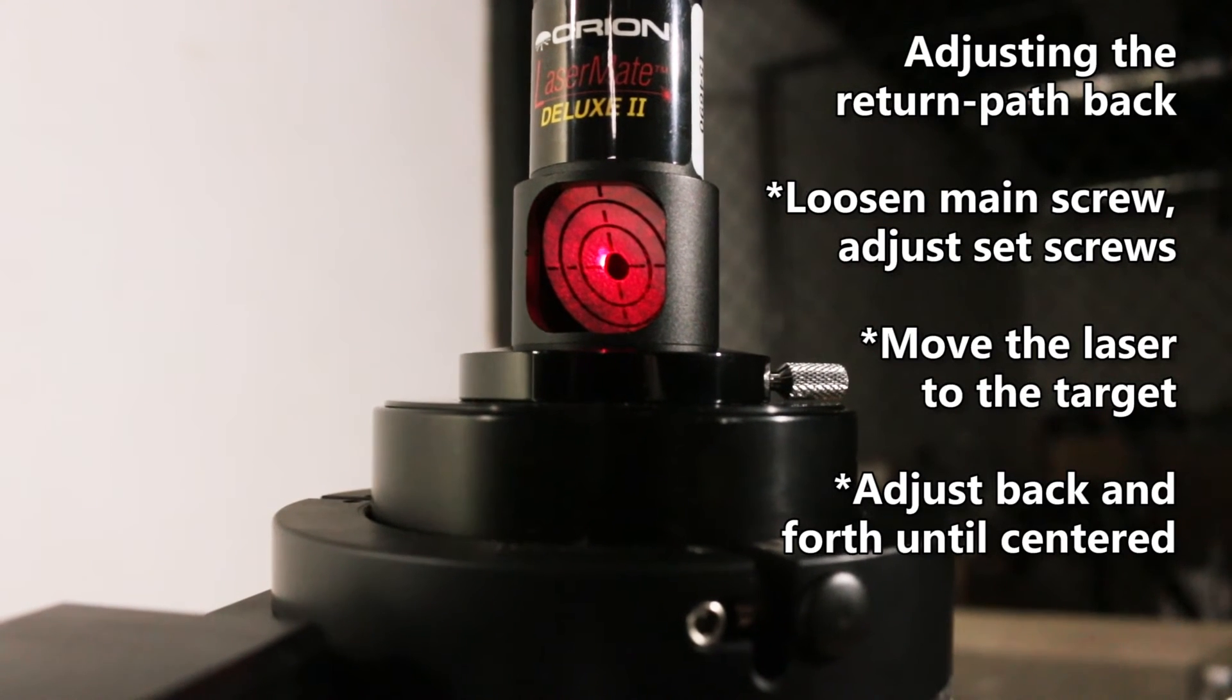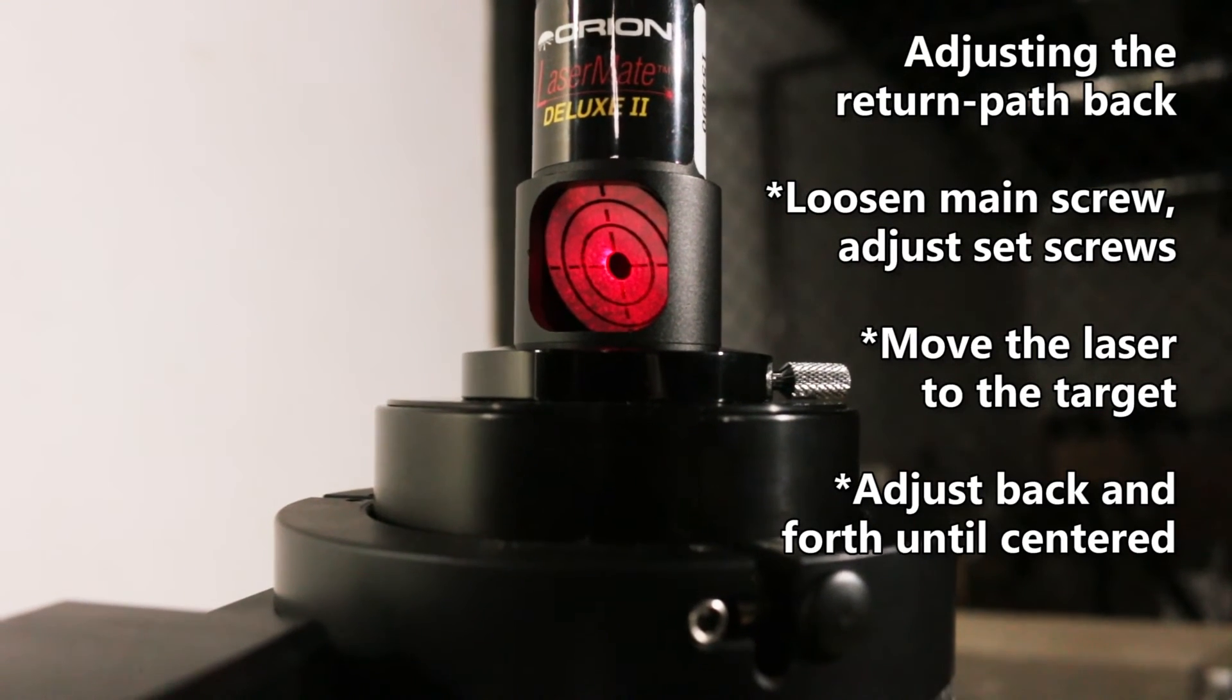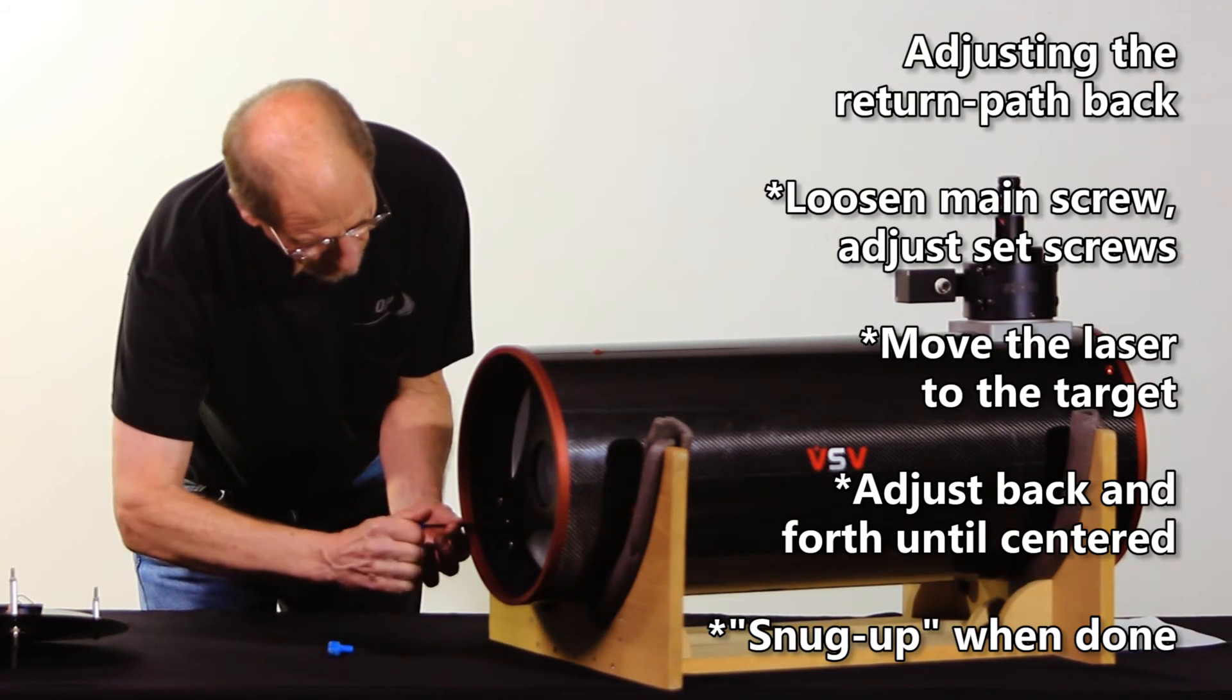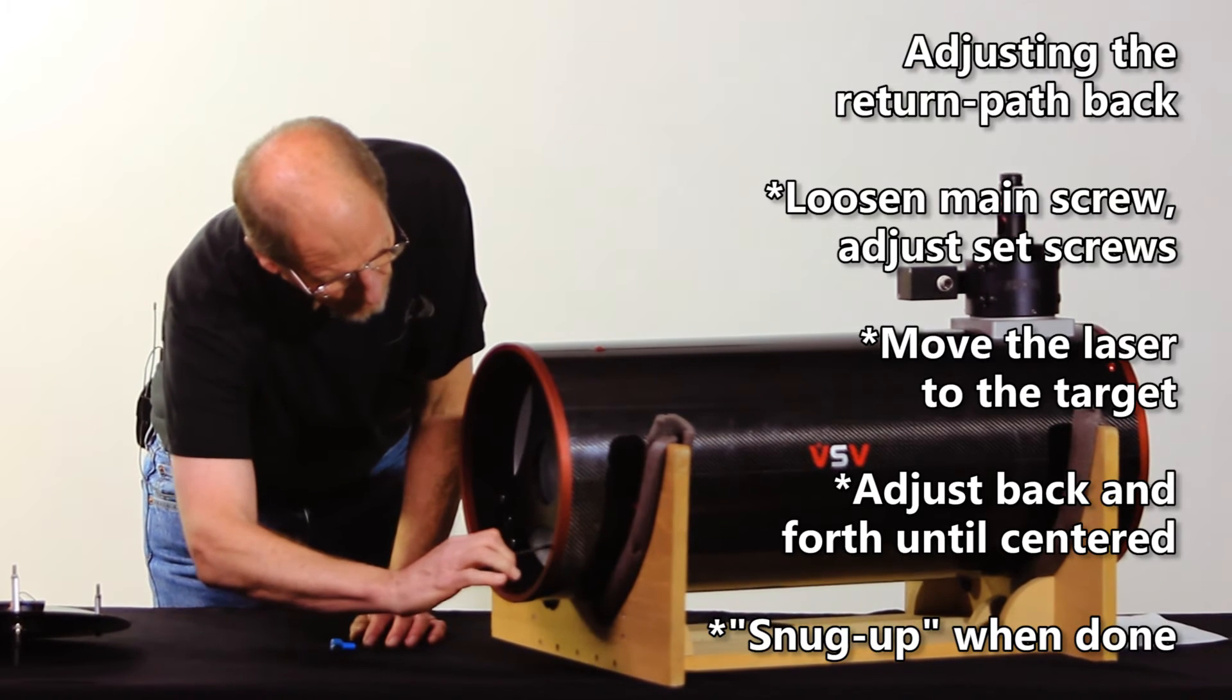And when the target disappears into the center, you're fully collimated. Then what you want to do is go back and re-snug up the original center bolts that puts pressure against those set screws.